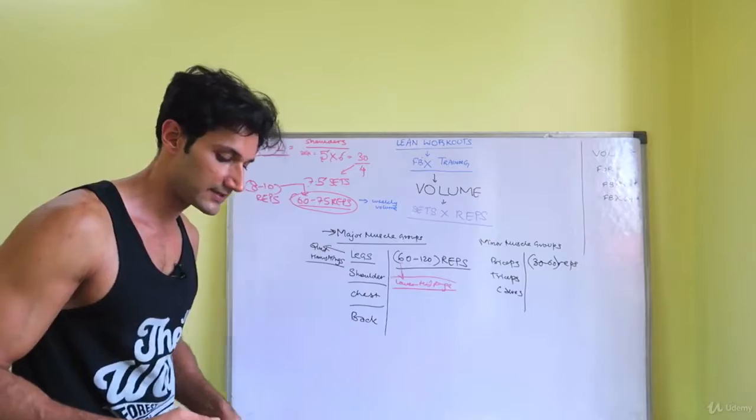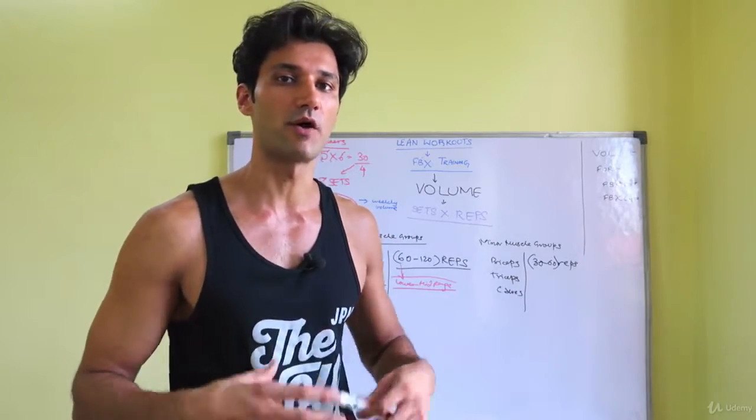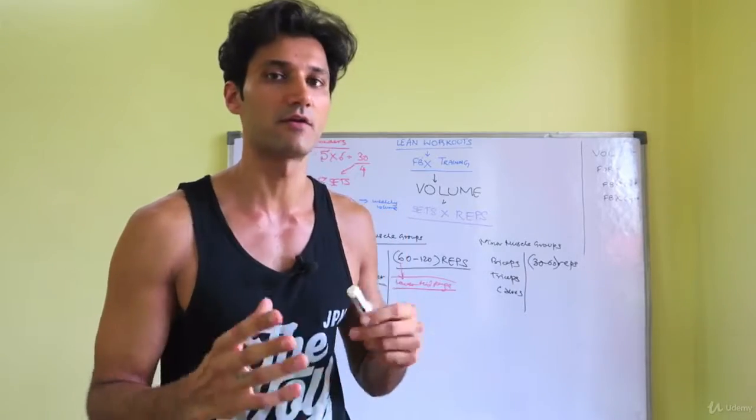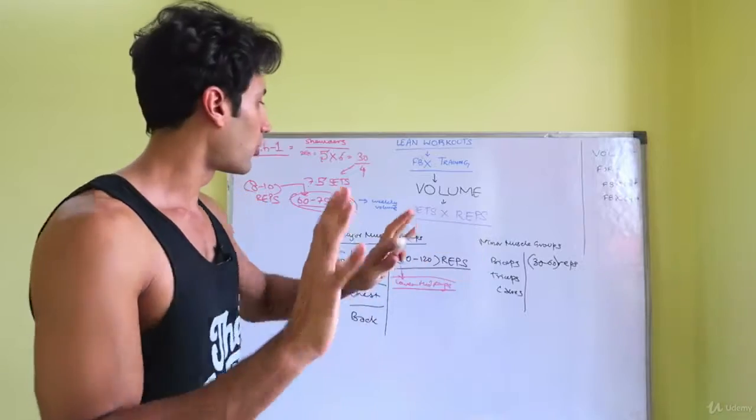Then I will also give you phase four training in Lean Pro. That's the shredded phase that you should start only when you have a body fat percentage less than 12% and have gained around 10-15 pounds of muscle. This is the volume.